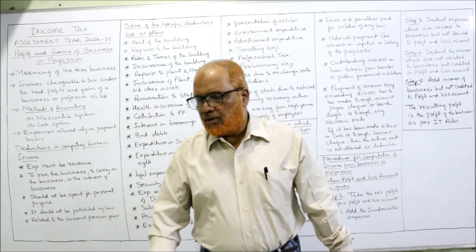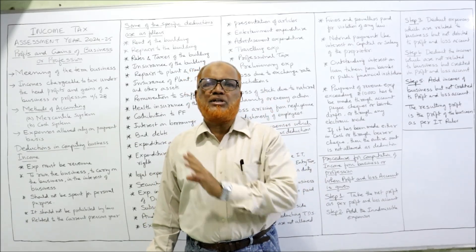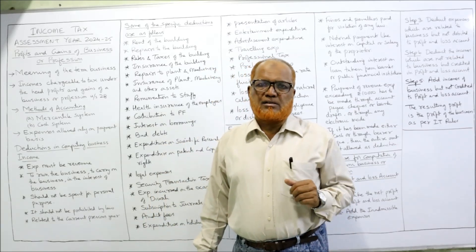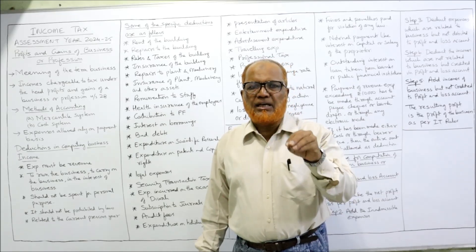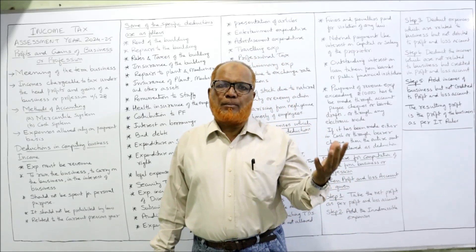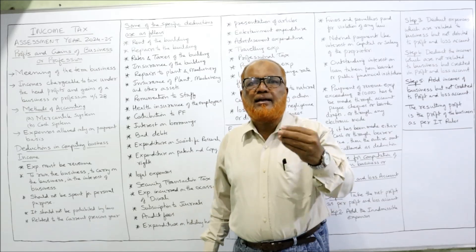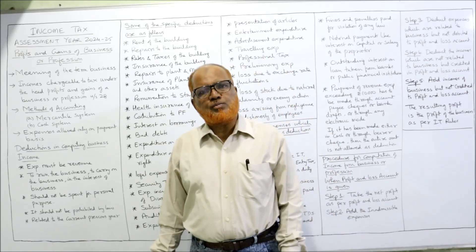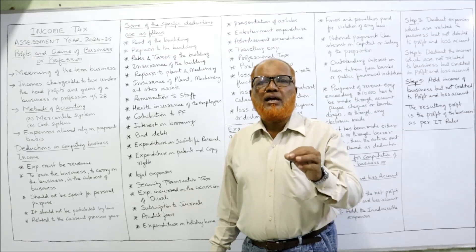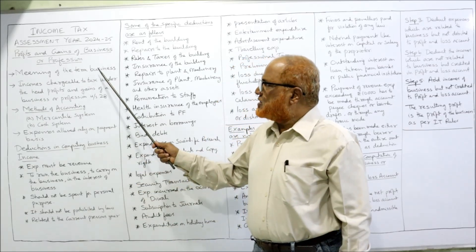This is the third head of income. The first head is income from salary, the second is income from house property, and the third head is PGBP — Profits and Gains of Business and Profession. So if a person is running a business, income earned from the business is taxable under PGBP. Just like if a person is having salary income it is computed under income from salary, or if a person has a property and lets it out, the rent received is taxable under income from house property. Similarly, any income arising from business or profession is taxable under PGBP.